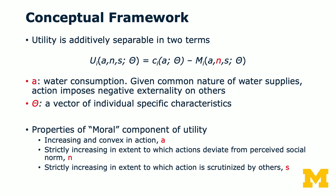More concretely, we can use a utility function to capture these different motivations. The utility function indexed by i for consumer i is a function of a — the action, which is water consumption — and n, the norm. Theta is a vector of individual-specific characteristics. N has two components: consumption, which depends on a, how much water you consume, and theta captures all other individual-specific factors. Minus the morality term m_i, which is also defined over a — your water consumption — and n, the extent to which the action deviates from the perceived social norm.